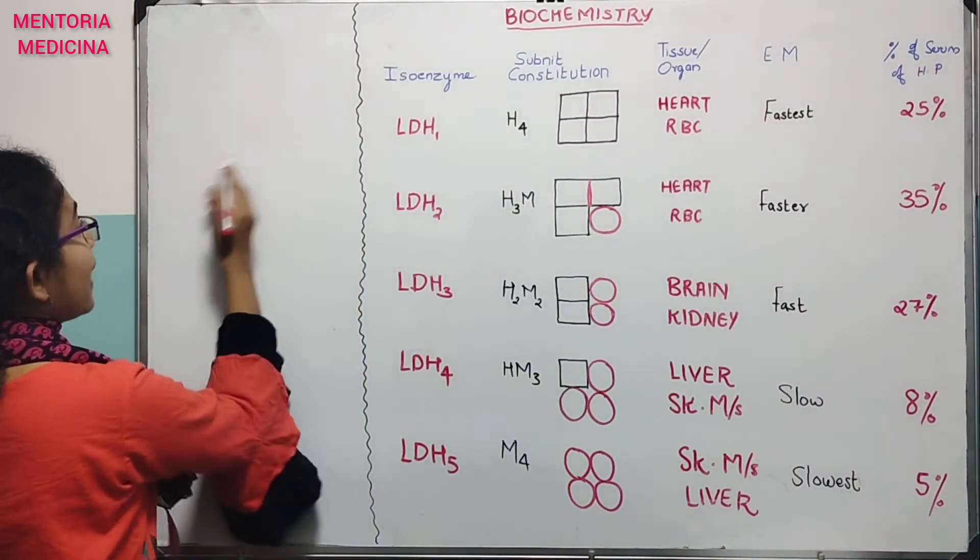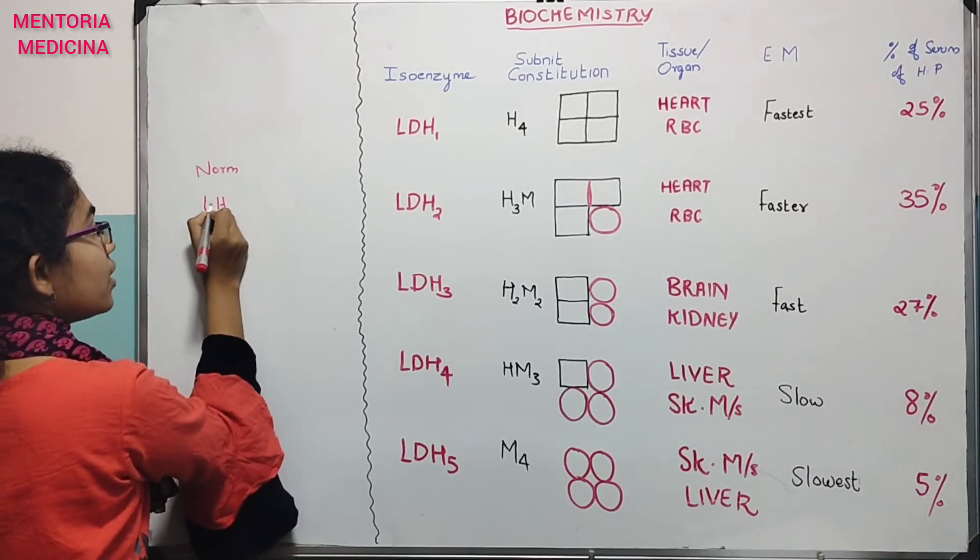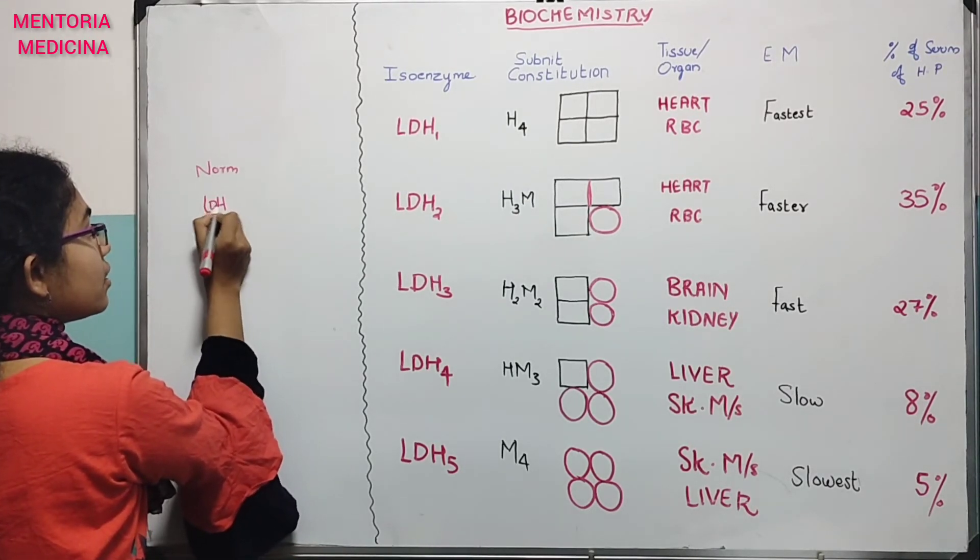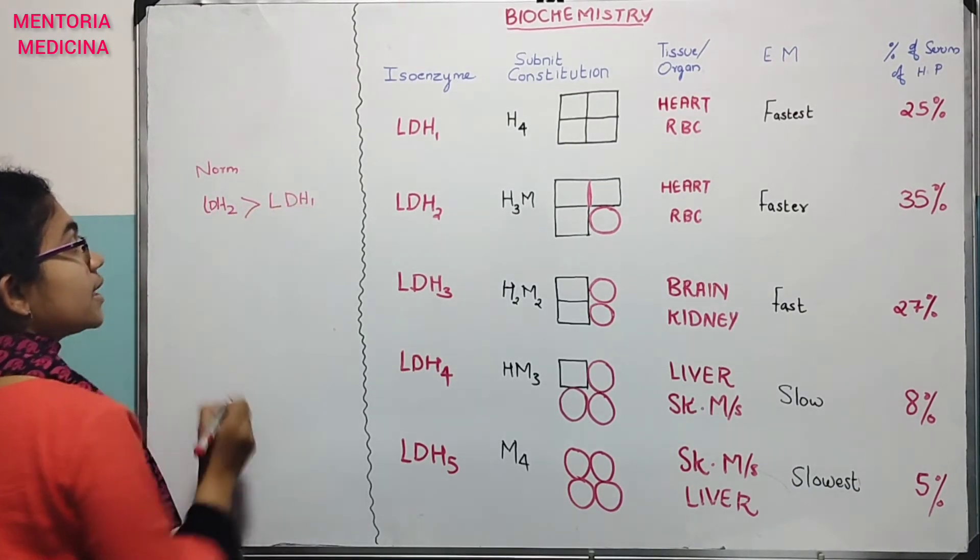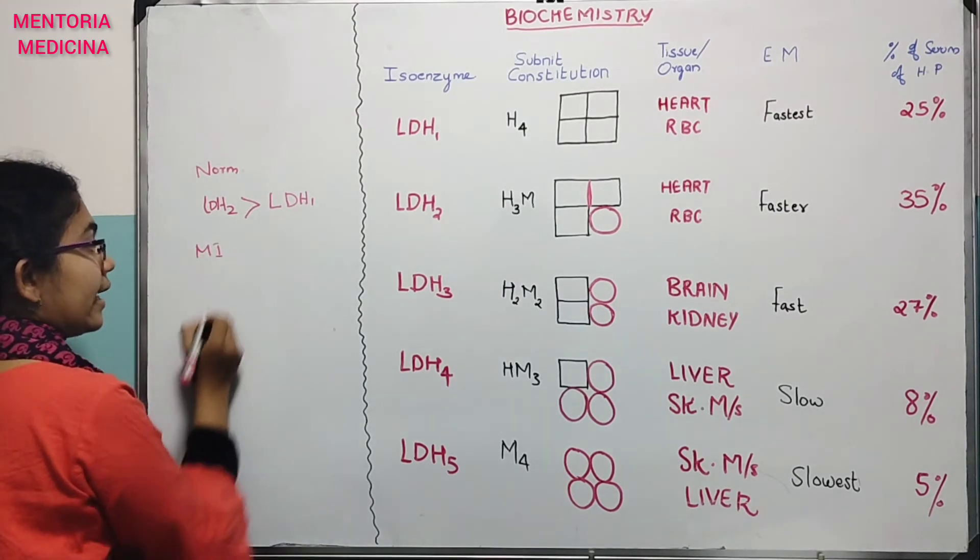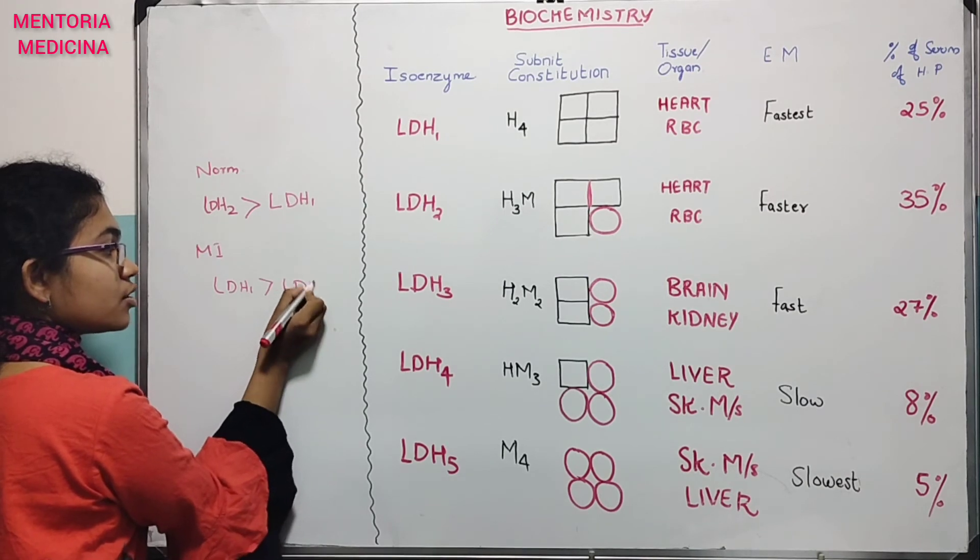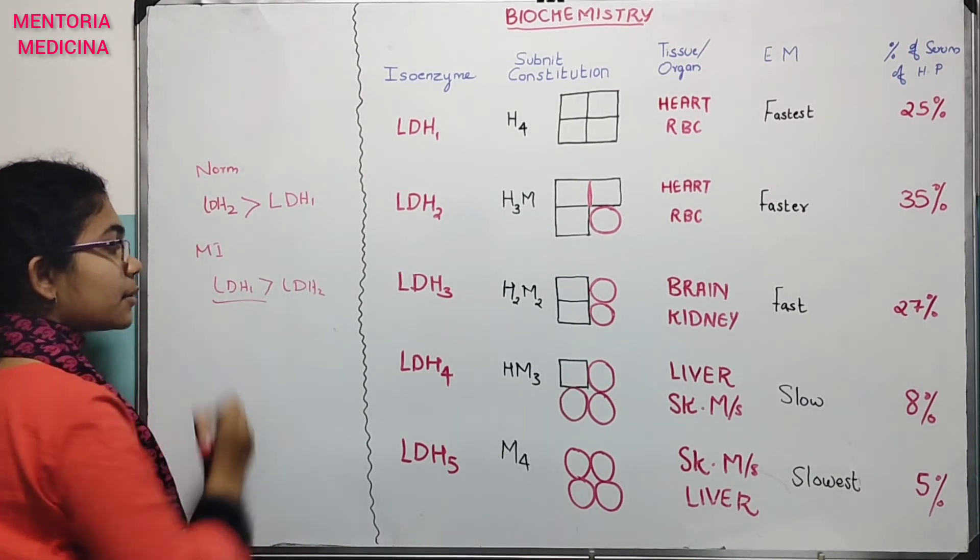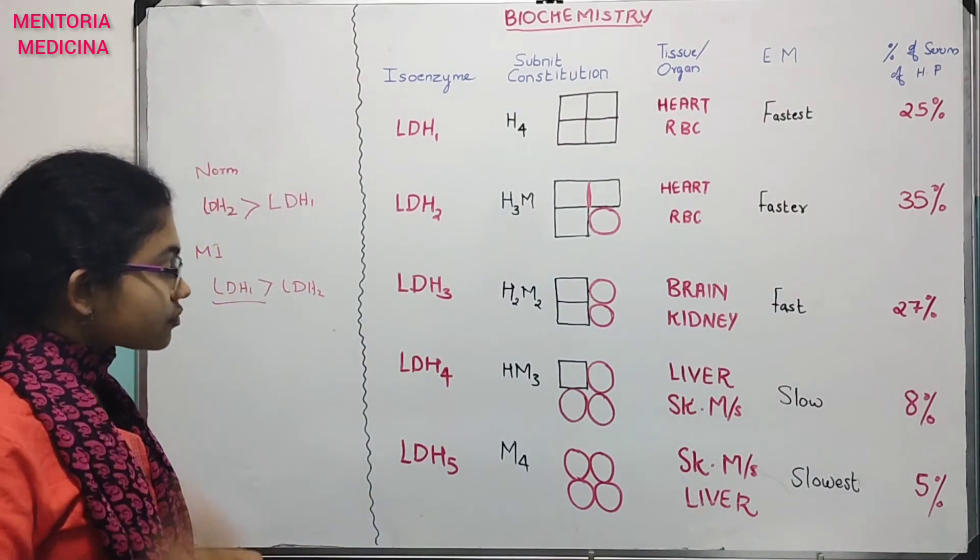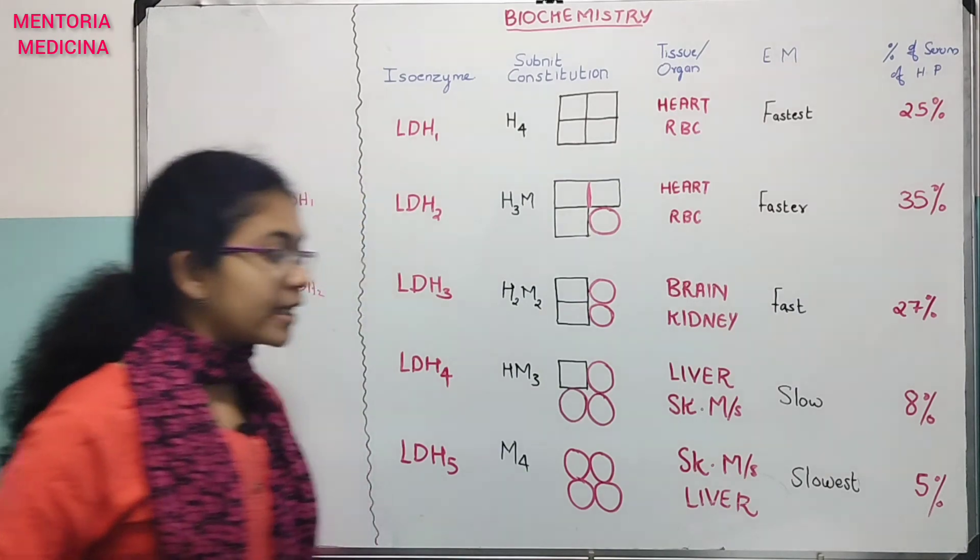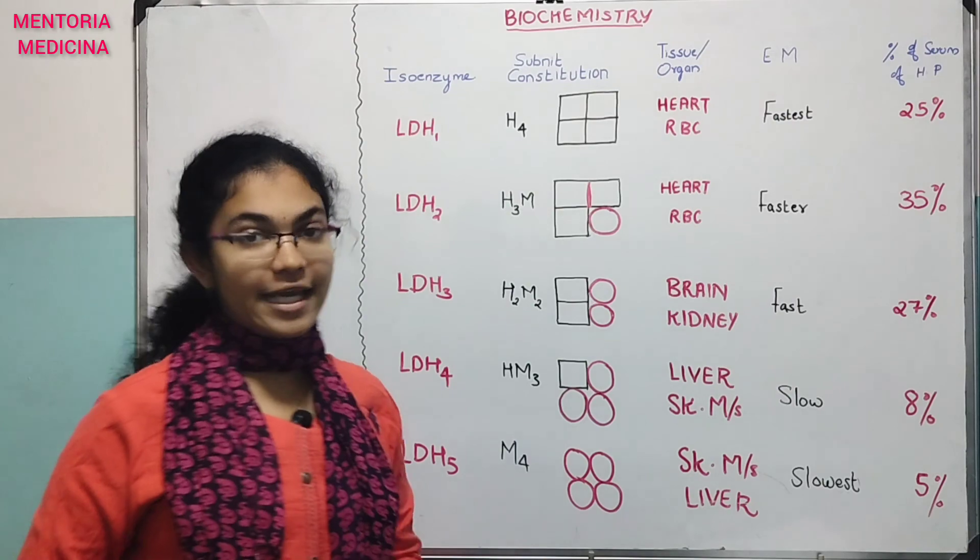That's why we have a flipped pattern. Normally, LDH2 is greater than LDH1. But in myocardial infarction, LDH1 is greater than LDH2. So LDH1 is the indicator of myocardial infarction.